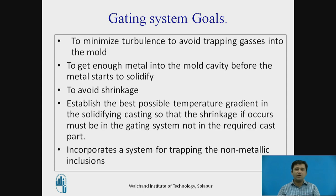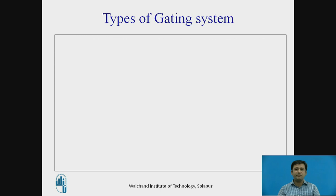The final important goal of the gating system is to incorporate a system for trapping non-metallic inclusions. When the metal flows through the system it carries some debris or non-metallic inclusions, and if that debris becomes part of the casting it will lead to defects or affect functioning. So these are the five important goals of the gating system.